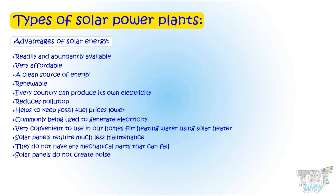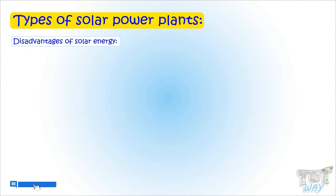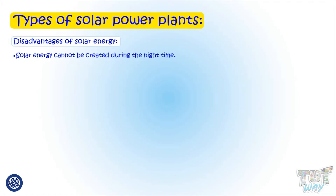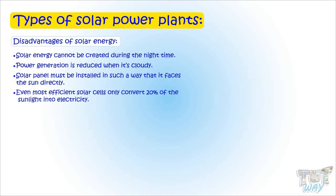Every good thing has some disadvantages too. The first and foremost disadvantage is that solar energy cannot be created during the night time. Power generation is also reduced when it's cloudy. Solar panels must be installed so that they face the sun directly, and even the most efficient solar cells only convert 20% of sunlight into electricity.